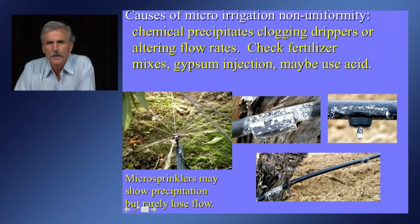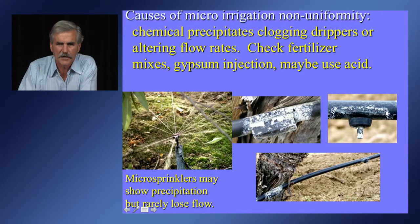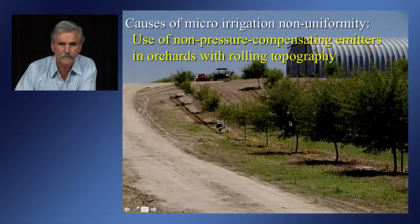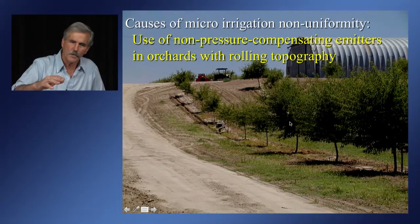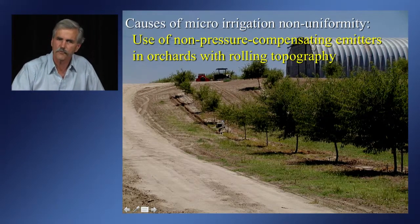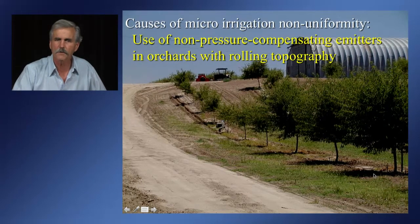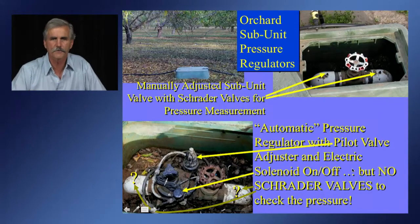Another problem is chemistry: high bicarbonate in the water combined with calcium gypsum injection to improve infiltration can precipitate lime and clog emitters. Uniformity issues also come from topography. If you don't have a system designed with pressure-compensating emitters and you have rolling hills, you'll get less water at the top, more water in the low areas, and poor uniformity and poor yield on trees at the top.